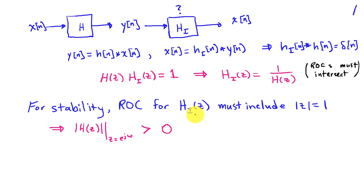If we want HI of z to be stable, then the ROC must include the magnitude of z equals 1. We have HI is 1 over H of z. Clearly H of z cannot go to 0 on the magnitude of z equals 1 because then HI of z would blow up somewhere on the magnitude of z equals 1, and we wouldn't have the ROC including the unit circle.